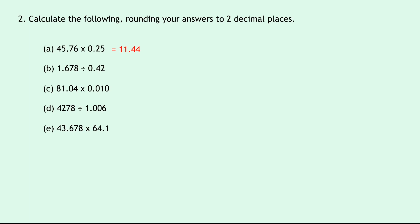Part B says 1.678 divided by 0.42. If we put that into our calculator, you'll get 3.995238 and so on. Rounding that to two decimal places will give us 4.00. Part C says 81.04 times 0.010. If we put that into our calculator, you'll get 0.8104, which rounds to 0.81.